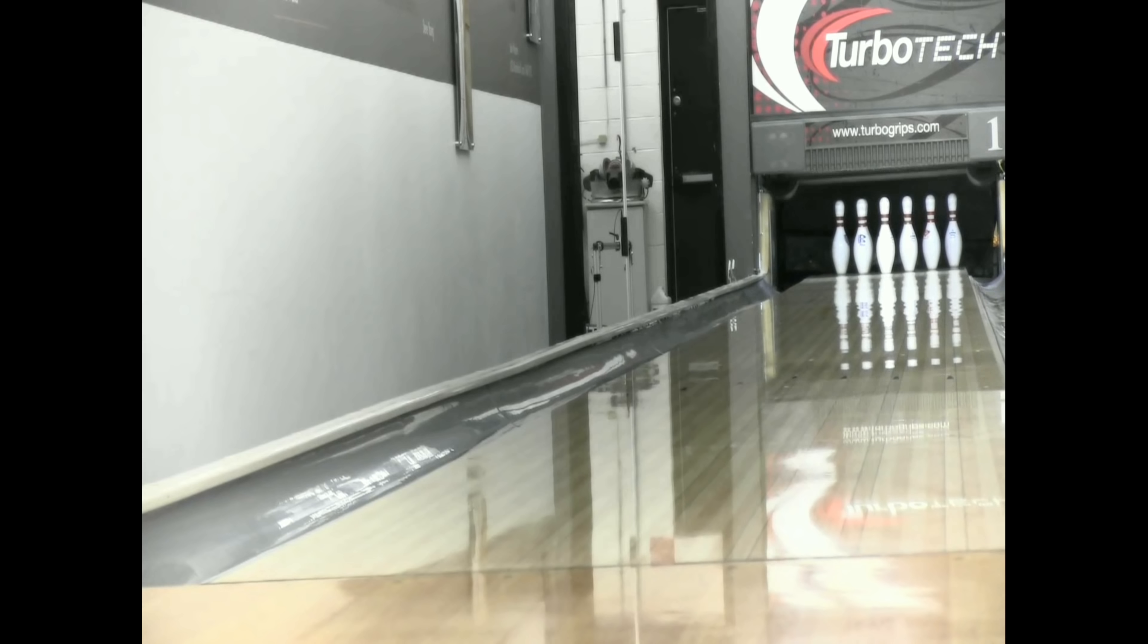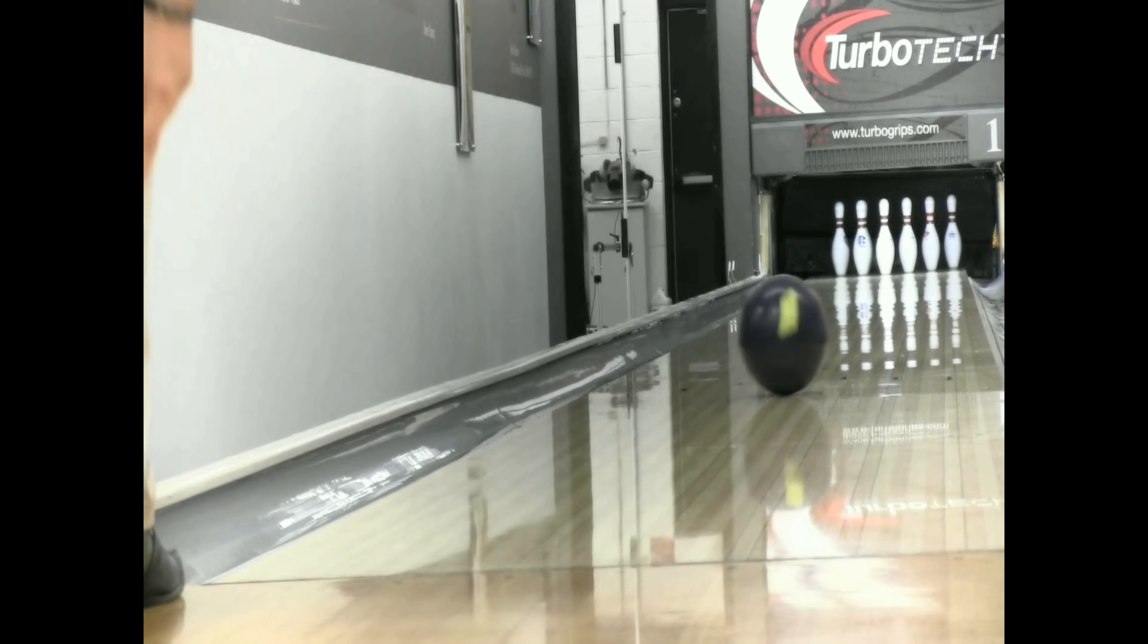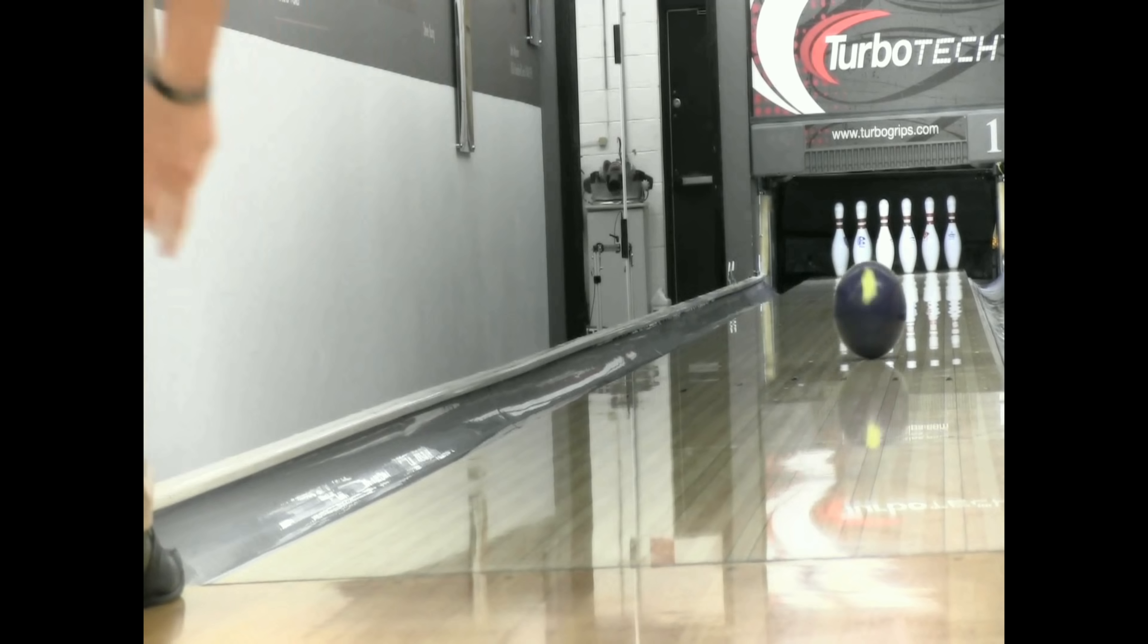Now what we want to do is we want to try to get our thumb out faster, so well before the fingers come out of the ball, and then see how much it rotates. We're not going to use wrist action yet. So thumb, fingers. You see how much faster that one's rotating and that's with just a firm wrist.